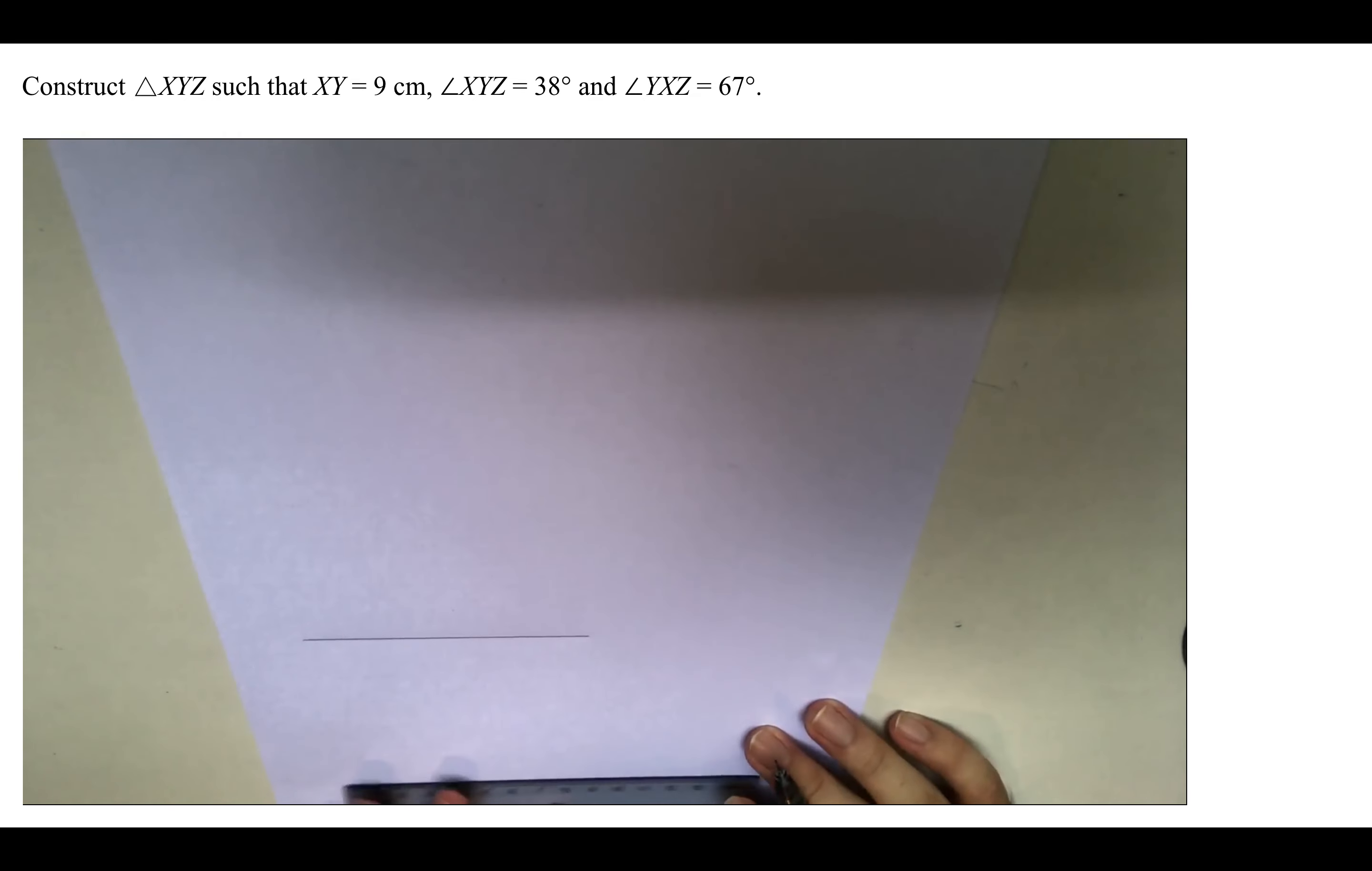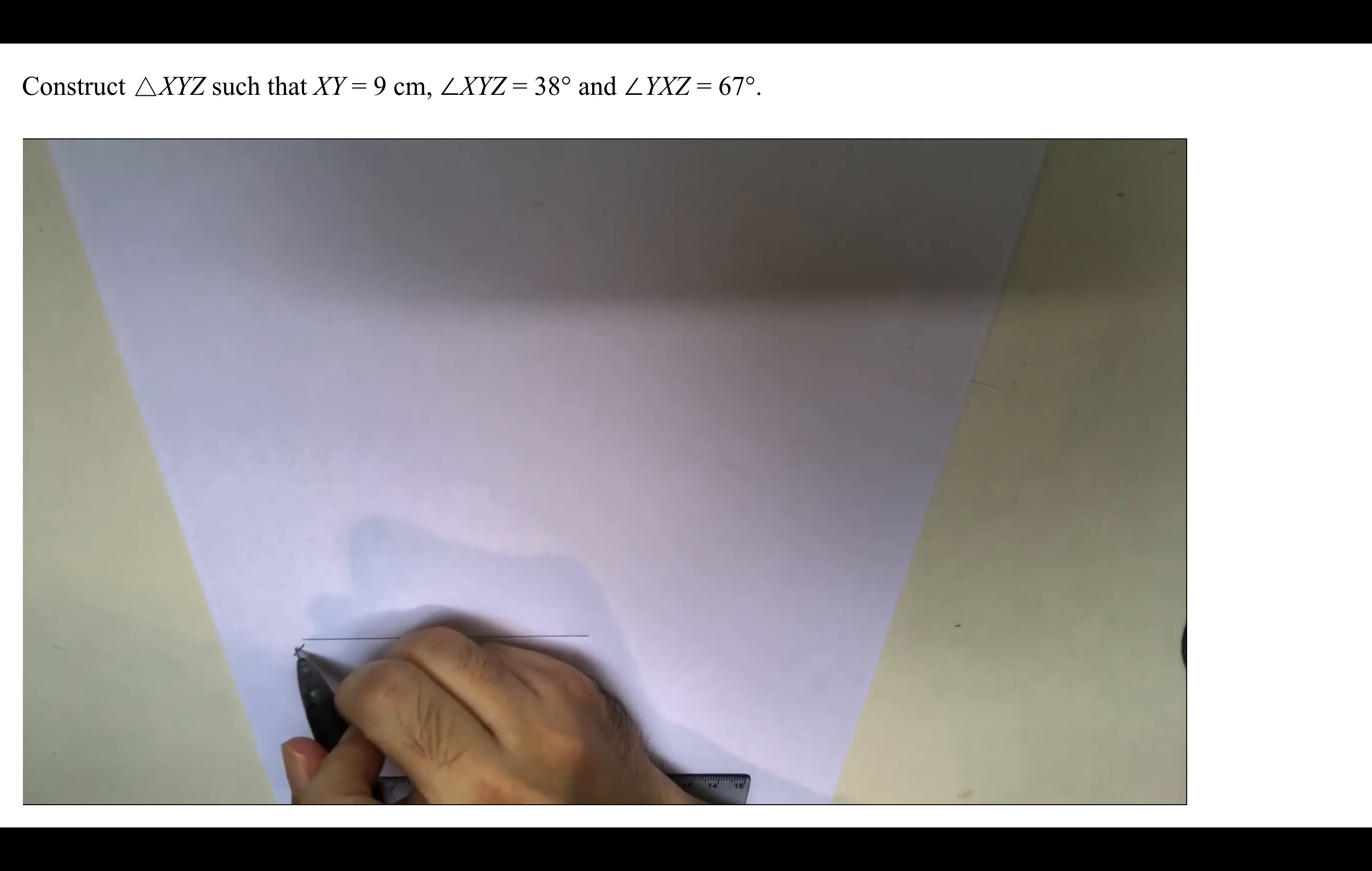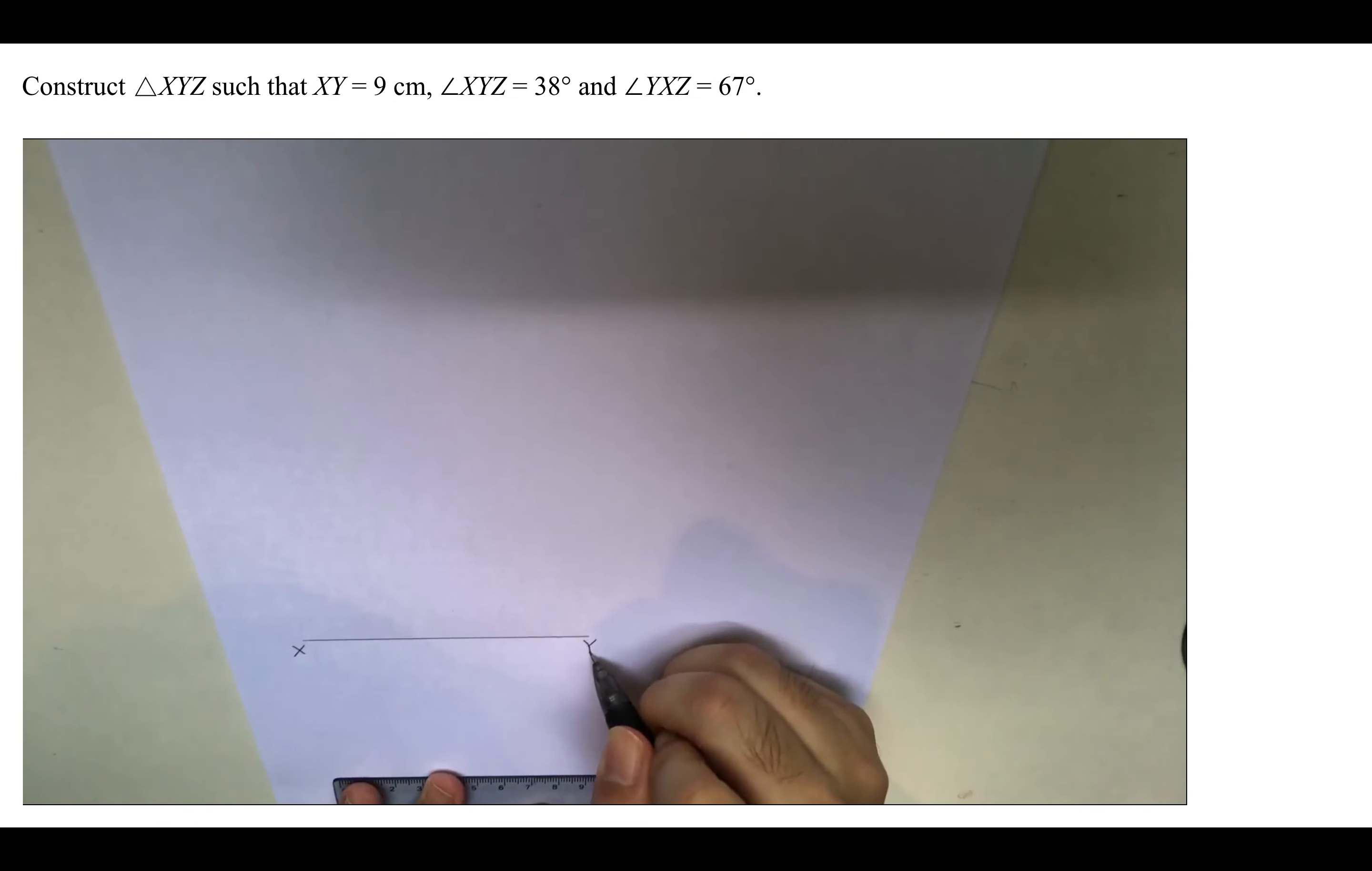What we need to do as we draw is label the points and the length that we know and it's given, so that there's no confusion later. And of course, labeling is always a good practice.